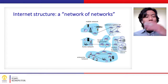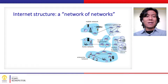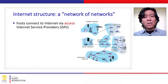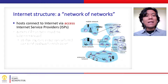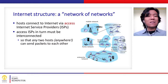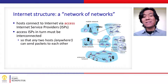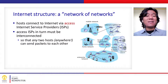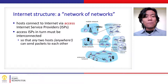Now we move to the internet structure. Looking at the network of networks diagram, any host or end system that wants to connect to the internet must access it through an Internet Service Provider, or ISP. ISPs must be interconnected with each other so that packets can be sent from the source to the destination.